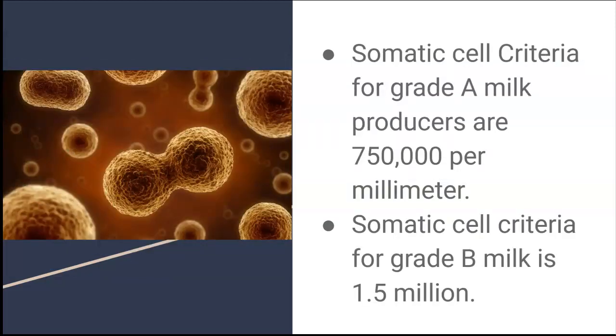Somatic cells are a germ that is toxic for humans. The allowed count in grade A milk is 7,500,000 per milliliter, while grade B milk nearly doubles that count.